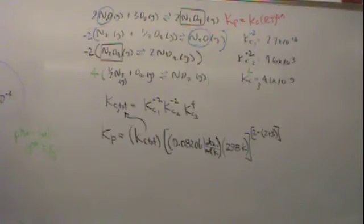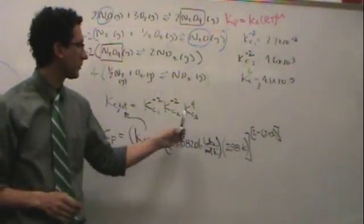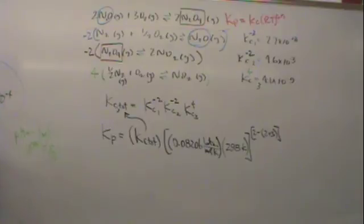So this is the equivalent of a Hess law problem but for Ks, where you have to know to raise it to the power and then ultimately multiply them instead of adding it.